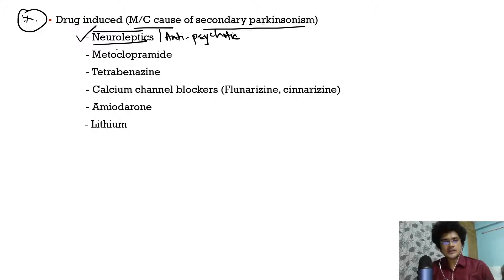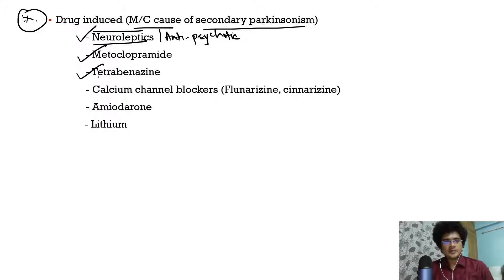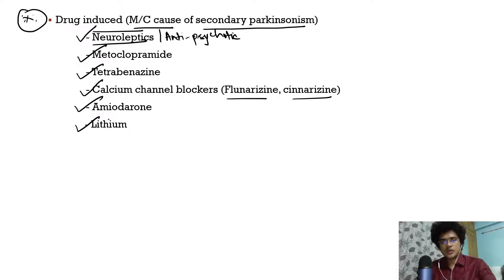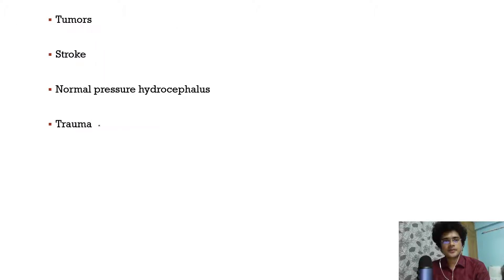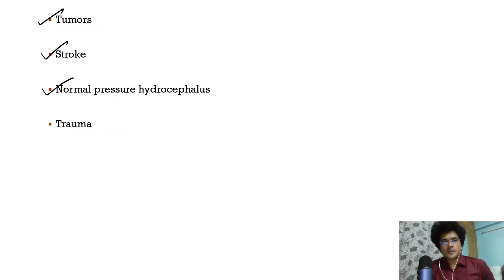Other drugs causing drug-induced Parkinson's include metoclopramide (an anti-emetic and pro-kinetic drug), tetrabenazine, calcium channel blockers like flunarizine and cinnarizine, amiodarone, and lithium. Don't forget the most common cause of secondary Parkinson's is drug-induced. Other causes include tumors, stroke, normal pressure hydrocephalus, and trauma.